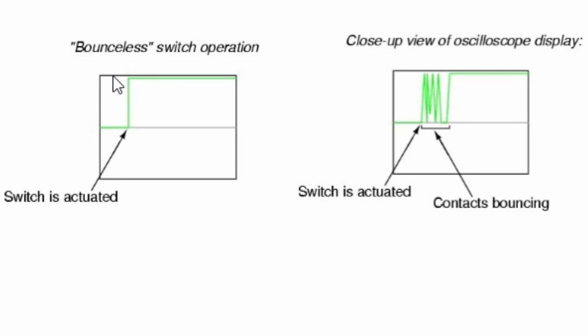So in theory, this is a bounce-less switch. When the switch closes, it closes immediately. And the current flows through it, rises immediately from zero to maximum. But in reality, this kind of switch doesn't exist.